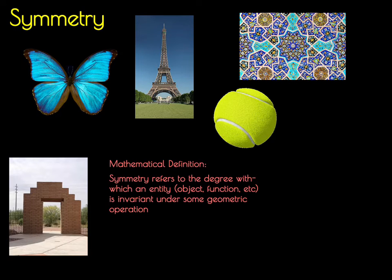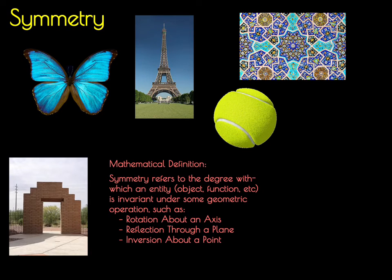For our purposes, we're going to use the mathematical definition of symmetry, which states that symmetry refers to the degree with which an entity, some object, a mathematical function, or really anything, is invariant under some geometric operation. These geometric operations include rotation about an axis, reflection through a mirror plane, inversion about a point, and even doing nothing counts as a symmetry operation.